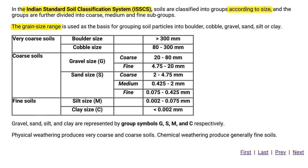Next, we are going to see coarse soils. Coarse soils are classified into two categories, namely gravel size and sand size. Gravel size is further classified into two types: coarse gravel, with a grain size range of 20 to 80 mm, and fine gravel, with a grain size range of 4.75 to 20 mm. Overall, gravel size has a grain size range of 4.75 to 80 mm.